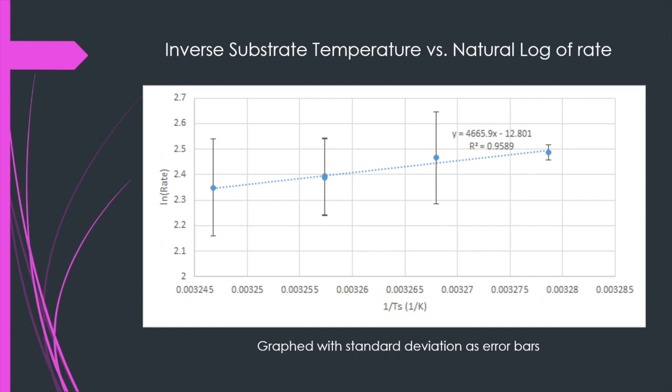Given that the data set for the first graph is statistically significant we can conclude that increasing the TBPO flow rate does increase the reaction rate. However, further testing needs to be conducted to ascertain the level at which this affects the reaction rate. For the temperature data provided by Hoxers and Kelting, the rate shows a strong correlation to the stage temperature. This is the opposite to the filament temperature and instead suggests no correlation. However, the data cannot be tested for statistical significance due to lacking the sample size for the data set. Therefore, we can only speculate and it would require further testing to see if the data sets had statistical significance.